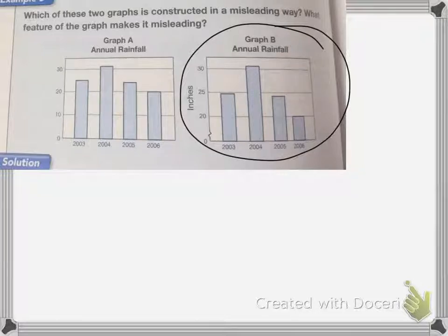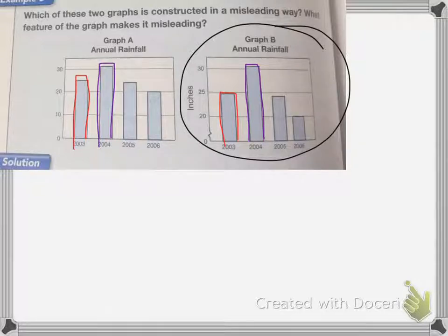So you notice, in 2003, this graph is much shorter than it is in graph A. So it makes it look like 2004 is much taller than it actually is in graph A.